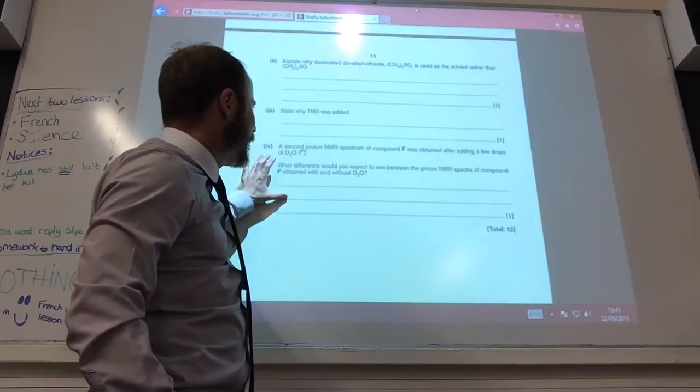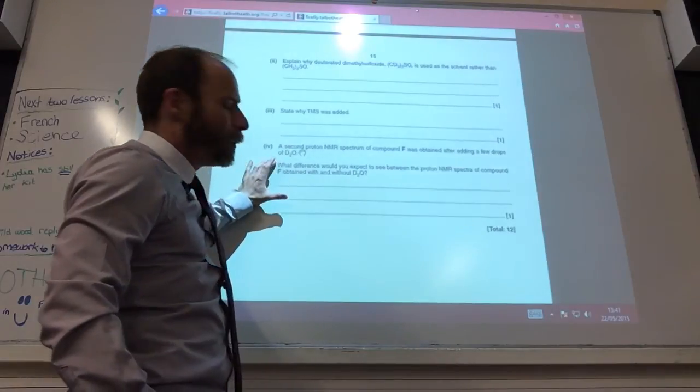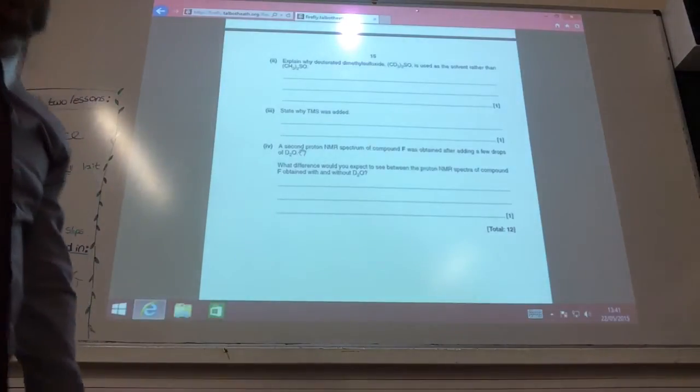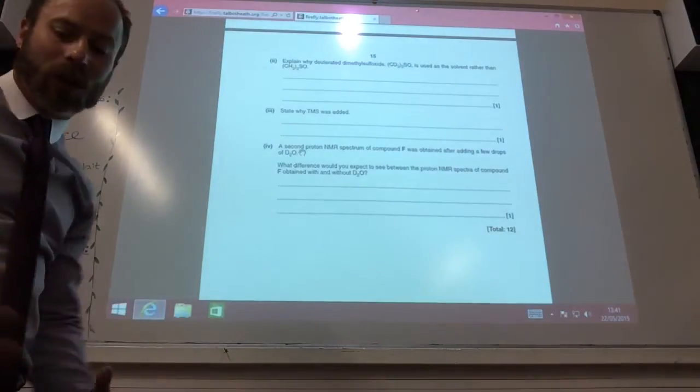The second proton NMR was obtained by adding a few drops of D2O. What would be the difference? The peak at 11 ppm would disappear. You would no longer see that because that's a proton attached to an oxygen.